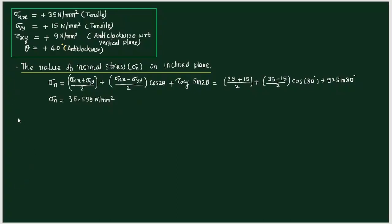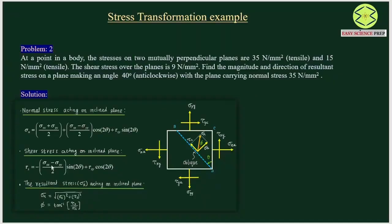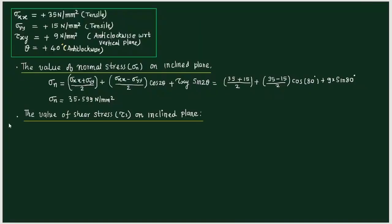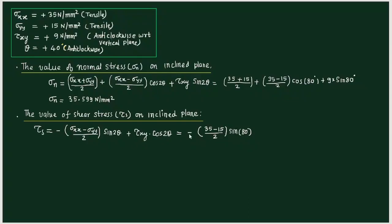Similarly, we can find the value of shear stress on the inclined plane. The expression is: tau_s = −(sigma_xx − sigma_yy)/2 · sin(2θ) + tau_xy · cos(2θ). Substituting sigma_xx = 35, sigma_yy = 15, theta = 40°: it becomes −(35 − 15)/2 · sin 80° + 9 · cos 80°. Solving this, the value of shear stress on the inclined plane comes as minus 8.285 N per mm².